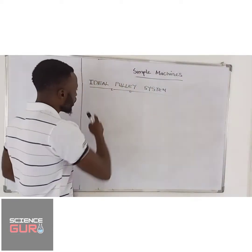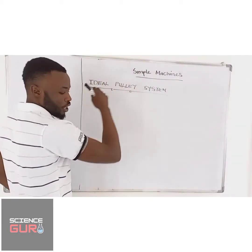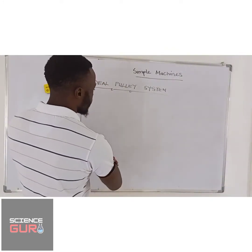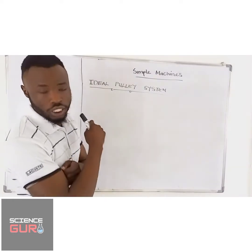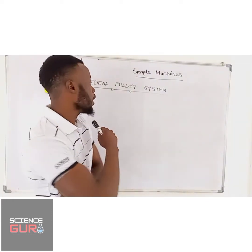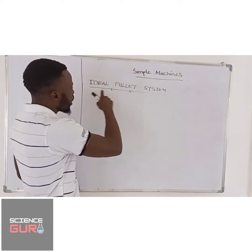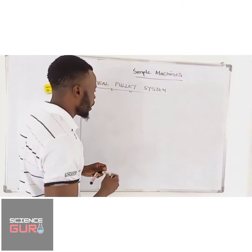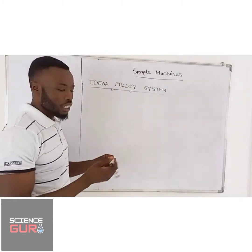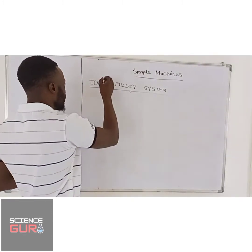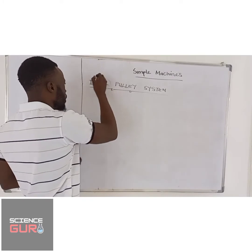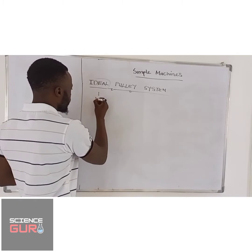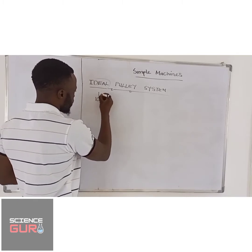In today's topic, we are looking at simple machines. You know that a machine is a device used to make work easy — anything that is going to make your work easy is called a machine. We are looking at how to find the ideal pulley system. When a machine is ideal, we mean that machine is 100% efficient.